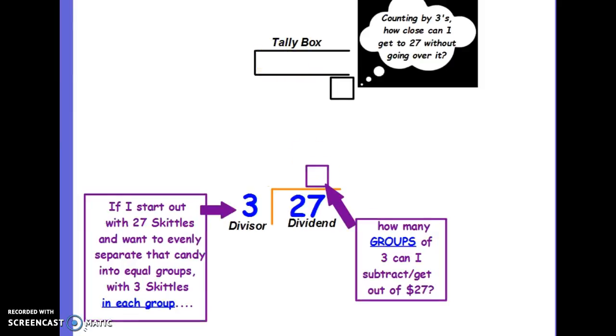Another example. 27 divided by 3. Skip counting by 3. How close can I get to 27 without going over? 3, 6, 9, 12, 15, 18, 21, 24, 27. Stop. Put 27 in my answer box. Place 27 in my dividend. Count that I have a bundle of 5, 6, 7, 8, 9 total tally marks, which means I have 9 groups of 3. And in this case, that's my quotient because when I subtract, I get 0.